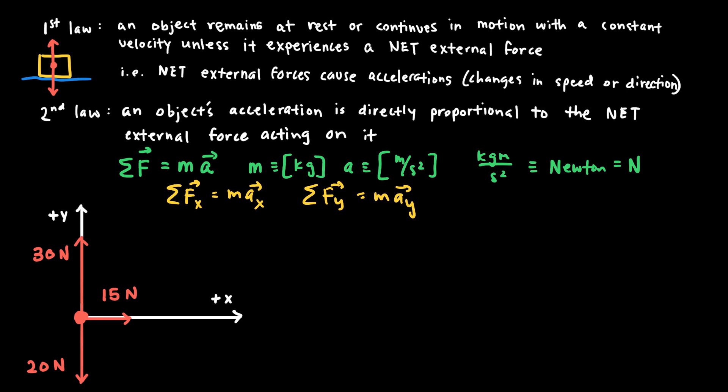I would like to work out an example where an object on a coordinate system is experiencing multiple forces. If this object is a 5-kilogram object, what would be the magnitude and direction of the acceleration it experiences when subject to three forces: a 30-newton force, a 20-newton force, and a 15-newton force in the directions shown?